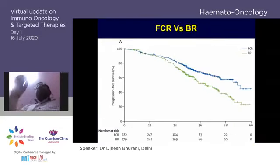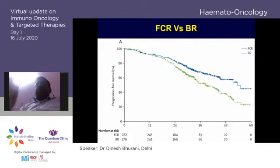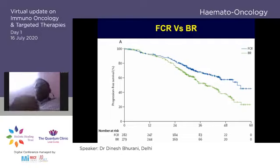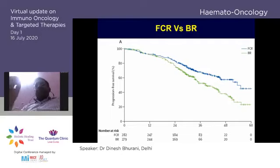Comparing FCR versus bendamustine-rituximab: this trial has definitively shown that bendamustine-rituximab is inferior to FCR. For someone who is eligible for FCR, we should not be using bendamustine-rituximab, which has been proven inferior.